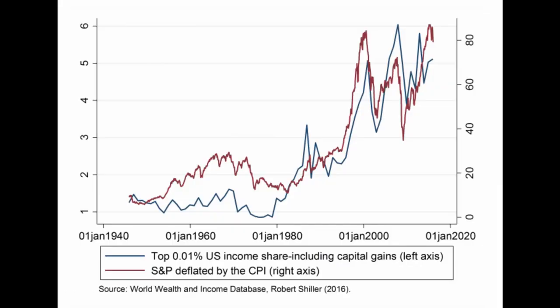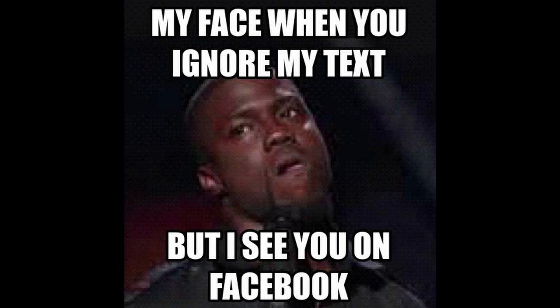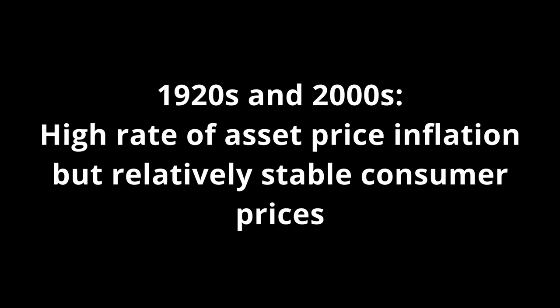Despite this, many economists have failed to see asset price inflation as a consequence of an inflated money supply. This oversight leads to the effects of inflation on inequality being underestimated or ignored. Periods of growing inequality and monetary inflation, such as the 1920s or the 2000s, were associated with a high rate of asset price inflation but relatively stable consumer prices. Therefore, to just focus on consumer price inflation as the only variable accounting for monetary policy leaves out most of the effects of money creation itself on inequality.